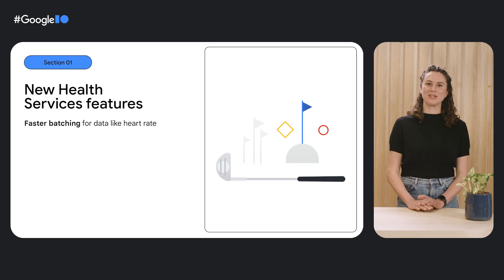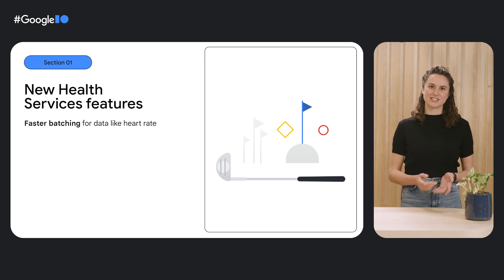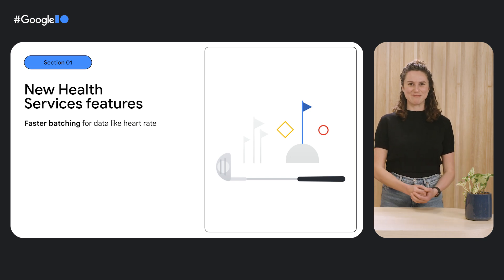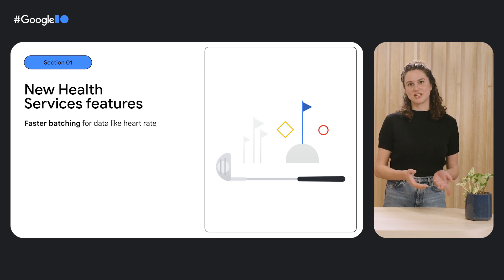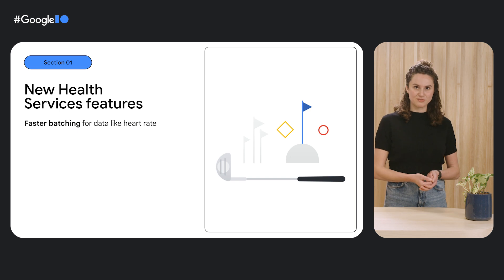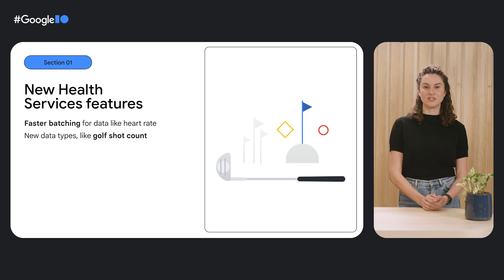We're expanding to support even more use cases for your users. In our latest release, we've added functionality to allow developers to increase the batching rate of fitness metrics. Health Services gathers high-frequency data but delivers it in periodic batches when the screen is off to save battery. Some use cases require shorter batching intervals, so starting with heart rate data, the new batching modes allow you to adjust the data delivery frequency to fit your use case. And on supported devices, we've added a new feature to automatically detect the number of golf shots.